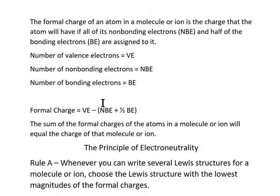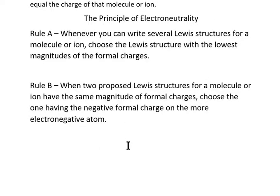The formal charge equals VE minus NBE minus half of BE. If this number is greater, the atom has a negative formal charge; if less, a positive formal charge. The sum of formal charges equals the overall charge of the molecule or ion. The principle of electroneutrality has two rules: first, choose the Lewis structure with the lowest magnitude of formal charges; second, when two structures have the same magnitude, choose the one with a negative formal charge on the more electronegative atom. Oxygen is more electronegative than nitrogen, so you'd want oxygen to carry the more negative formal charge.